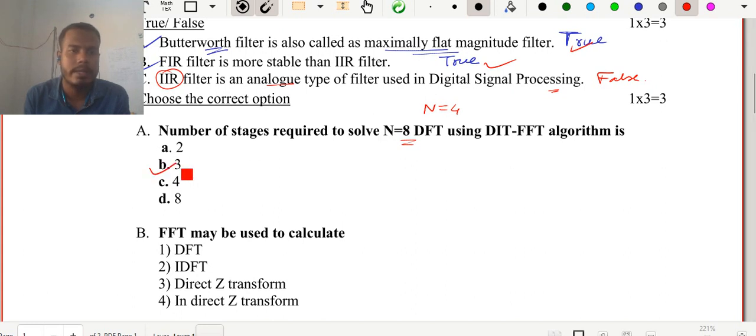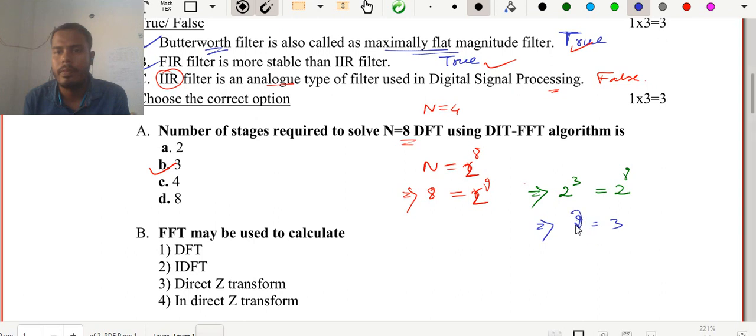The answer is 3, but you can solve this using the formula. If you want to solve this, there is a formula: N = r^γ, where N equals how much? 8. Then r is required stages, and γ is the number. You can write it like this: N = 2^γ. So here 8 means you can break it like 2^3, which equals 2^γ. If you compare both sides, the γ will be 3.